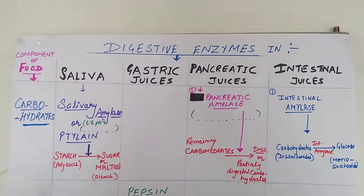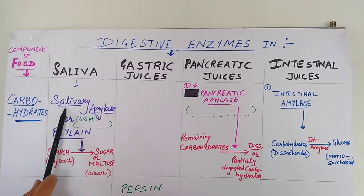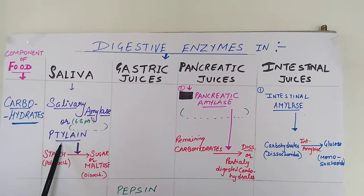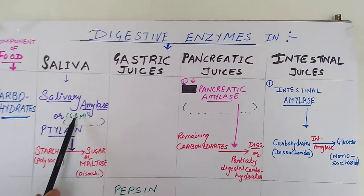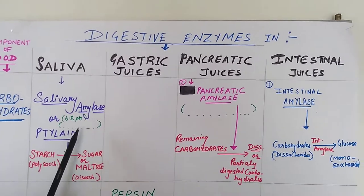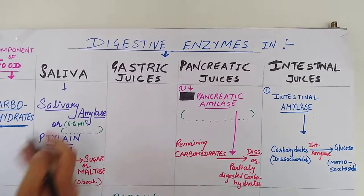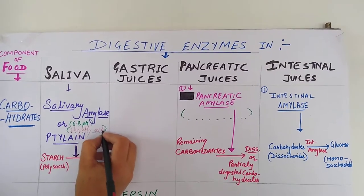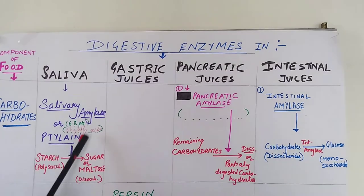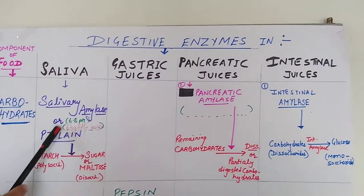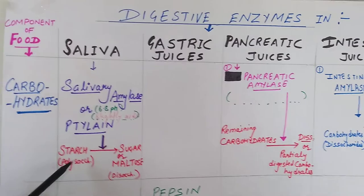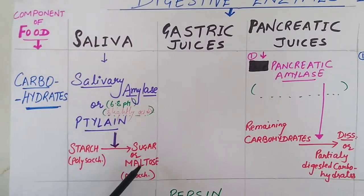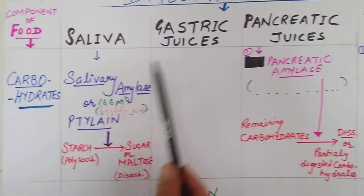Saliva has salivary amylase, which is an enzyme also called ptyalin. It works at a specific pH of 6.8, which is slightly acidic — slightly acidic medium is required for its action. In this, starch, which is a polysaccharide, is converted into maltose, which is a disaccharide.